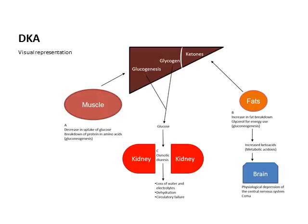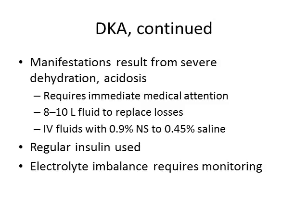Manifestations of DKA include severe dehydration, electrolyte imbalance, and severe acidosis — these patients need immediate medical attention. You'll see low blood pressures and changes in level of consciousness. Fluid replacement is substantial — 8 to 10 liters — starting with isotonic normal saline then moving to hypotonic half-normal saline. Regular insulin is the only insulin that can be given IV, so patients may need an IV insulin drip, and electrolytes must be monitored vigilantly.